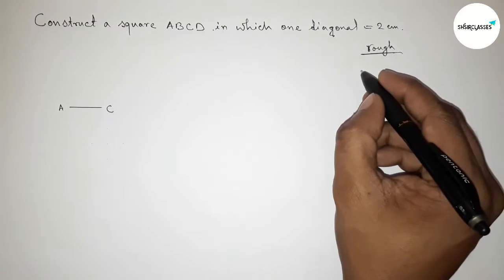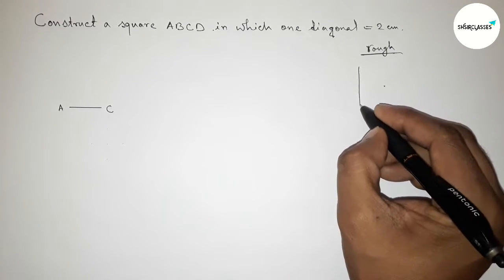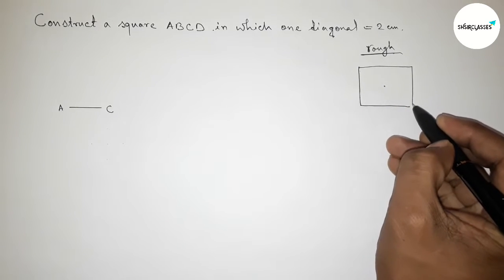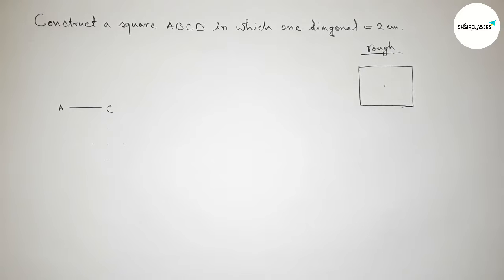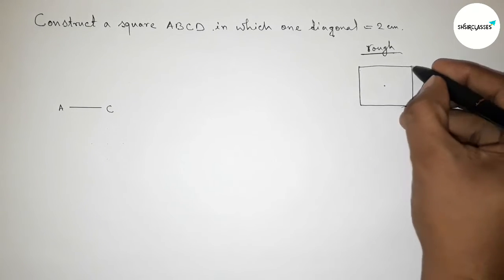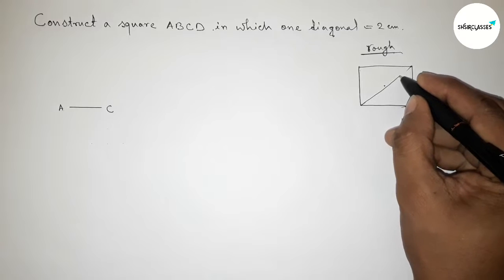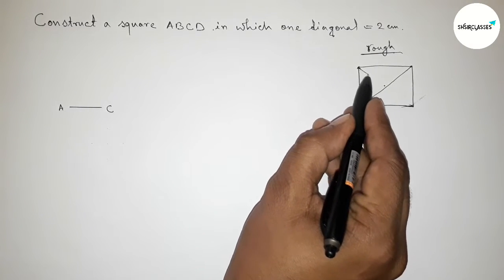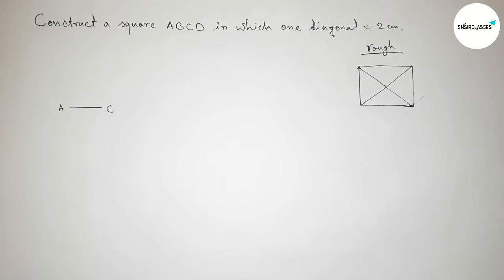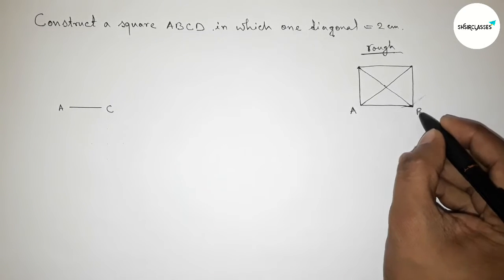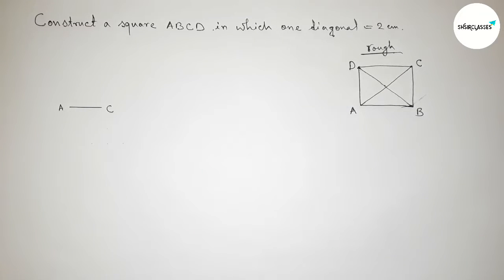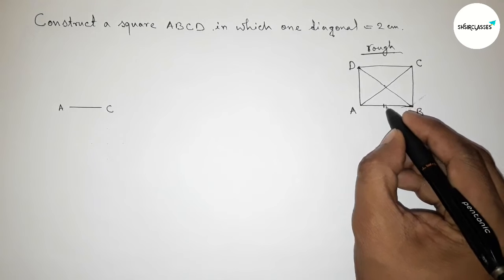Next, roughly discussing about some important properties. So first drawing here a square roughly by this way, and now joining this diagonal first and joining this diagonal.